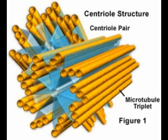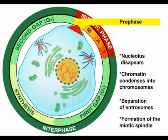Mitosis is a continuous process that is arbitrarily divided into five phases for the convenience of description: prophase, prometaphase, metaphase, anaphase, and telophase. It is apparent during prophase that nuclear division is about to occur because chromatin is condensed and the chromosomes are visible. The parental chromosomes are already duplicated and composed of two sister chromatids held together at a centromere. During prophase, the nucleolus disappears and the nuclear envelope fragments. The spindle begins to assemble as the two centrosomes migrate away from one another. In animal cells, an array of microtubules called asters radiates toward the plasma membrane from the centrosomes, and it is thought that the asters serve to brace the centrioles during later stages of cell division.